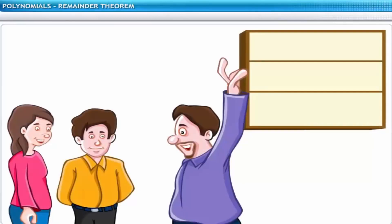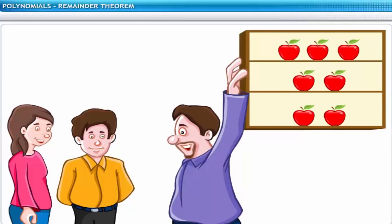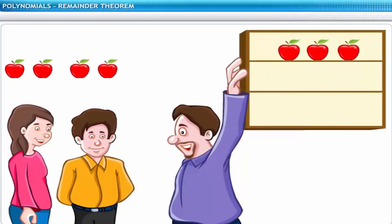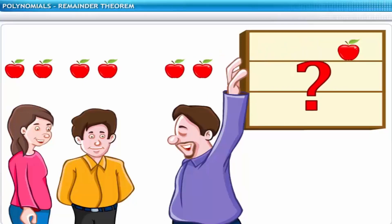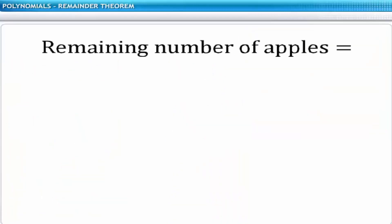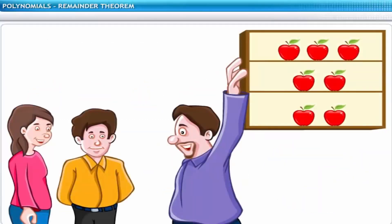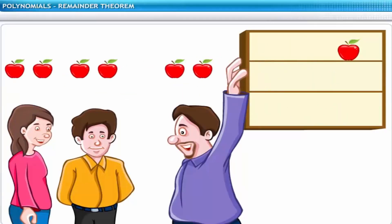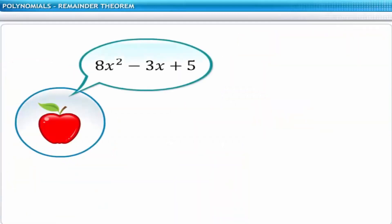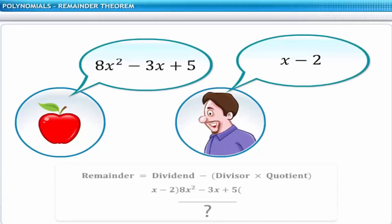Here is a simple problem that involves division. John has 7 apples and shares them with his friends Jaycee and Jill, so that all 3 of them get an equal number. Each gets 2 apples, meaning 6 are distributed, and the remainder equals 7 minus 3 times 2, which equals 1. However, if the number of apples and recipients were polynomials, such as 8x squared minus 3x plus 5 and x minus 2, then the remainder can be calculated quickly using the remainder theorem.